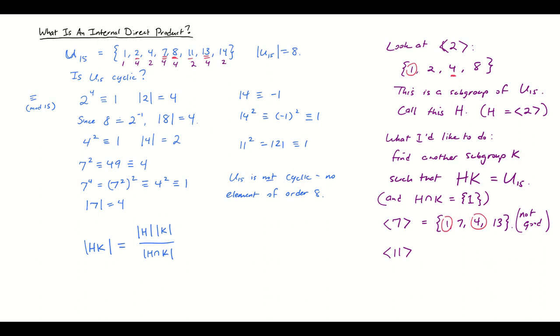But 11 has order 2, so I think this might have some hope. So the subgroup generated by 11 is going to be 1 and 11. Clearly no intersection with the subgroup generated by 2 except for the identity. That's the only element in common. And does H times K generate the entire group? Let's go ahead and call this K because I have a good feeling about this.